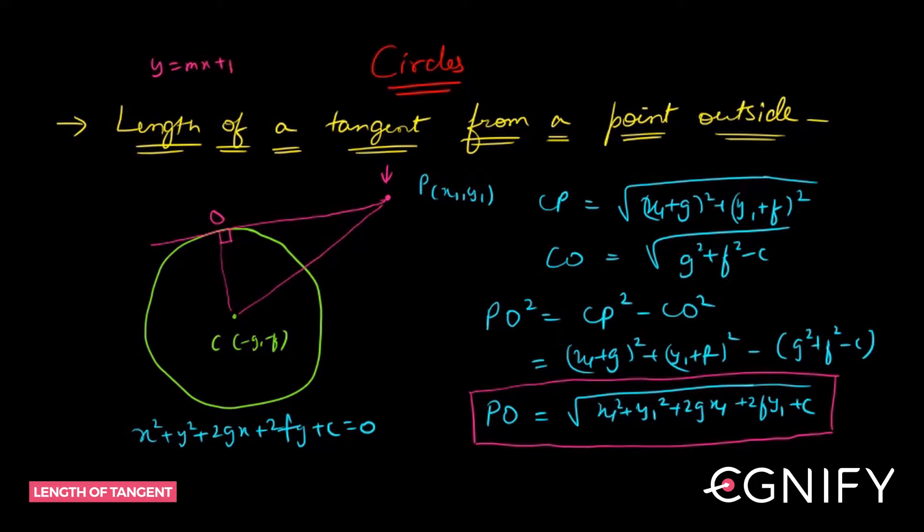Equal to y equals mx plus a into under root 1 plus m square. Put that in, make it pass through the point x1 y1, make a quadratic in m, solve it, and get the equation of the tangent. Now I need to find out how to find the length of that tangent.